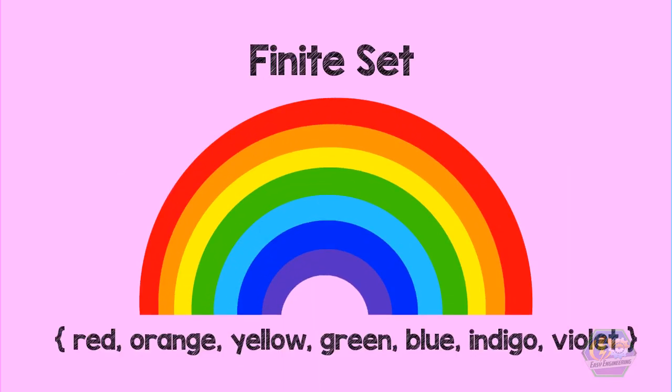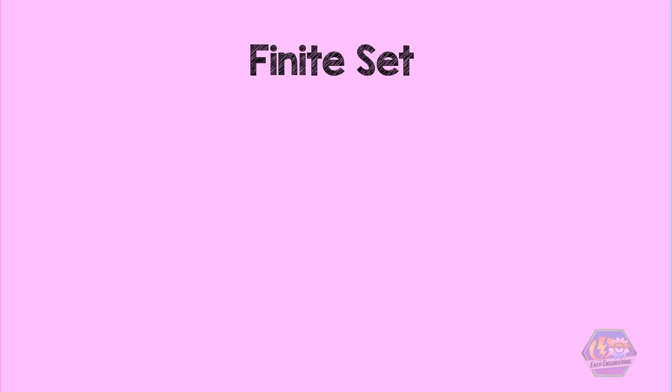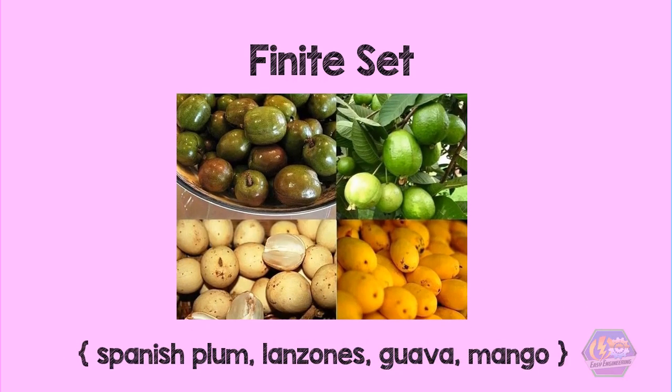Let us take for example the set of all the colors of the rainbow. A rainbow has seven colors. We have red, orange, yellow, green, blue, indigo and violet. Since we can count the elements of this set, then this set is considered as a finite set. Another example would be the set of all fruits native to the Philippines. This set is also finite since it has stated a specific country for the kinds of fruits asked.